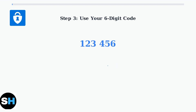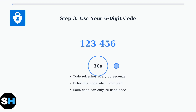Now you can see the six-digit code that you'll need for authentication. Step three: the six-digit code appears next to your account name. This code refreshes automatically every 30 seconds for security. Simply enter this code when prompted by the service you're signing into. Watch as the timer counts down — when it reaches zero, a new code is automatically generated to maintain security.